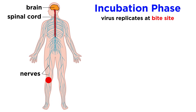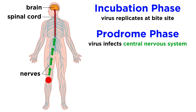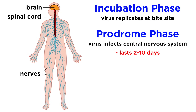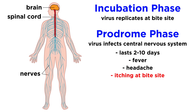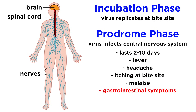After the initial replication in the muscle tissue, or incubation phase, the virus infects the central nervous system, traveling to the spinal cord and finally the brain, which is the prodrome phase. The prodrome phase can last between two and ten days, and symptoms typically include fever, headache, itching at the site of the bite, malaise, gastrointestinal symptoms, fatigue, or anorexia.